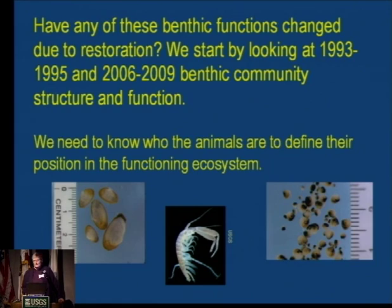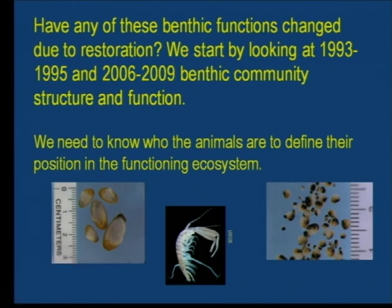We're doing that by examining data collected in the 1990s — between 1993 and 1995 — and in 2006 and 2009. We've tried to match hydrologic year types, but primarily one set of data is before and one is after restoration. These are spatially intensive samples done three times a year at about 50 stations, reduced to 28 stations for this study. They go from San Mateo Bridge to Coyote Creek, sampled in spring, summer, and fall.